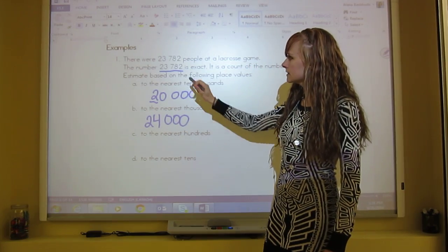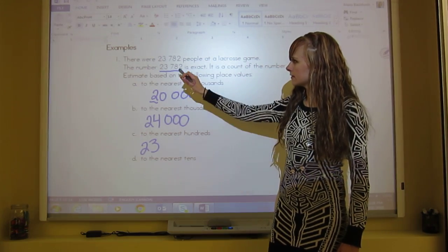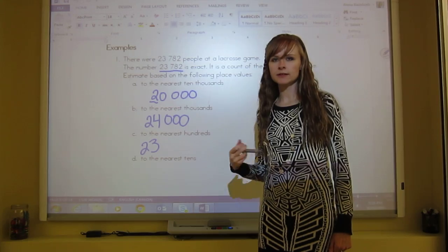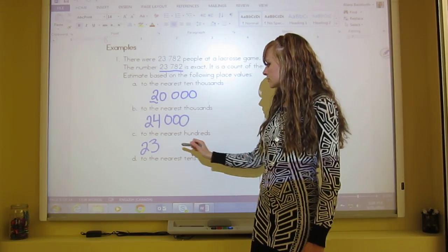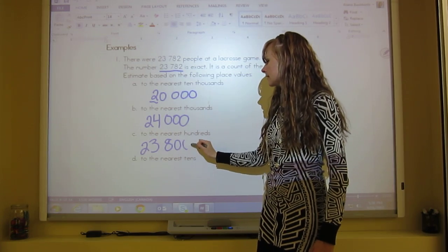To the nearest hundreds, that's at the seven. So the two and the three stay the same. And then the seven, we look right next door at the eight. Eight is five or more. So we raise the score. So seven turns into an eight. And the rest is zeros. So 23,800.